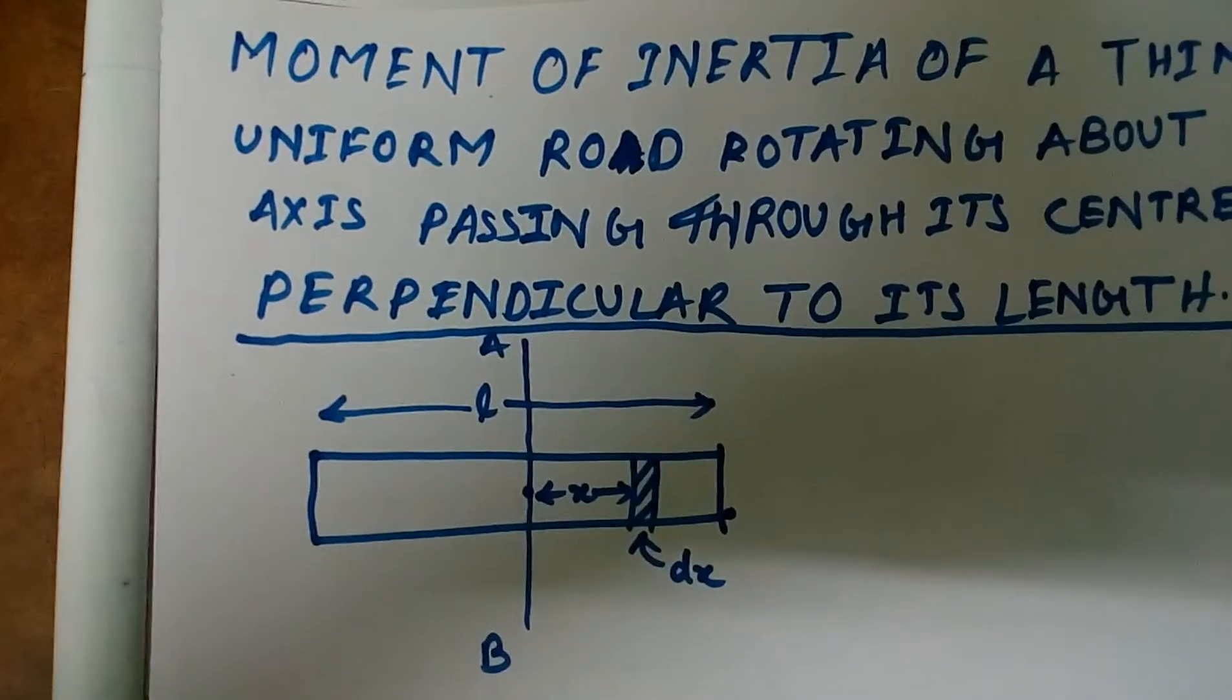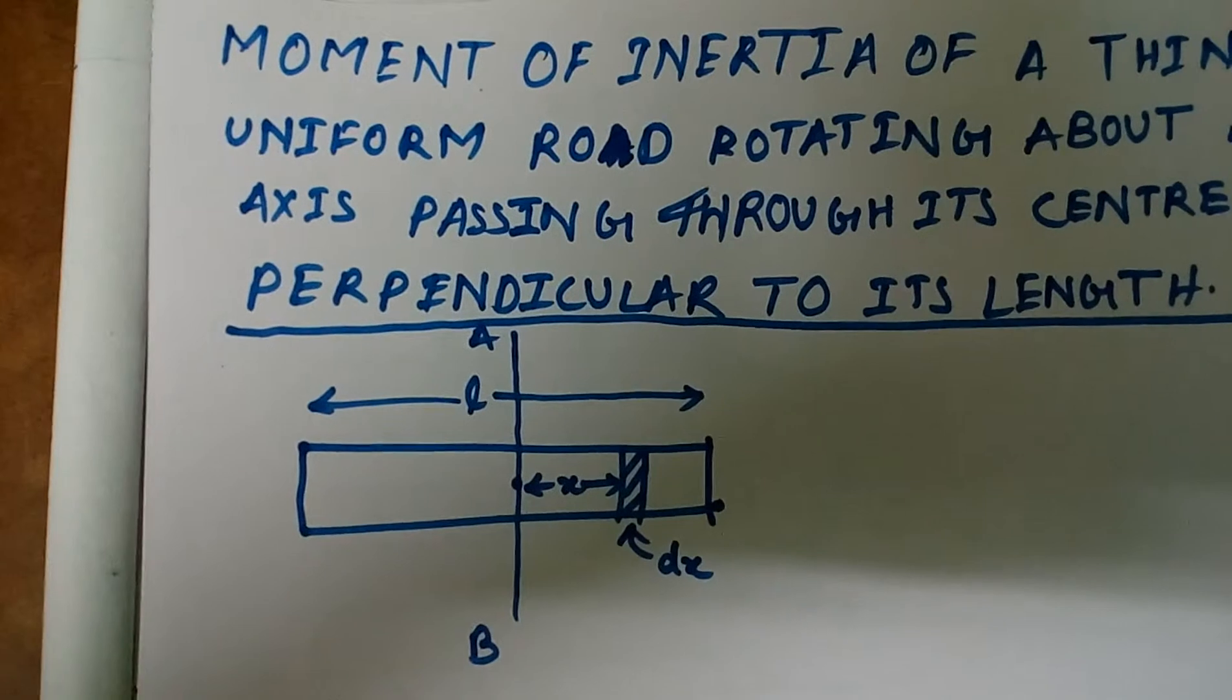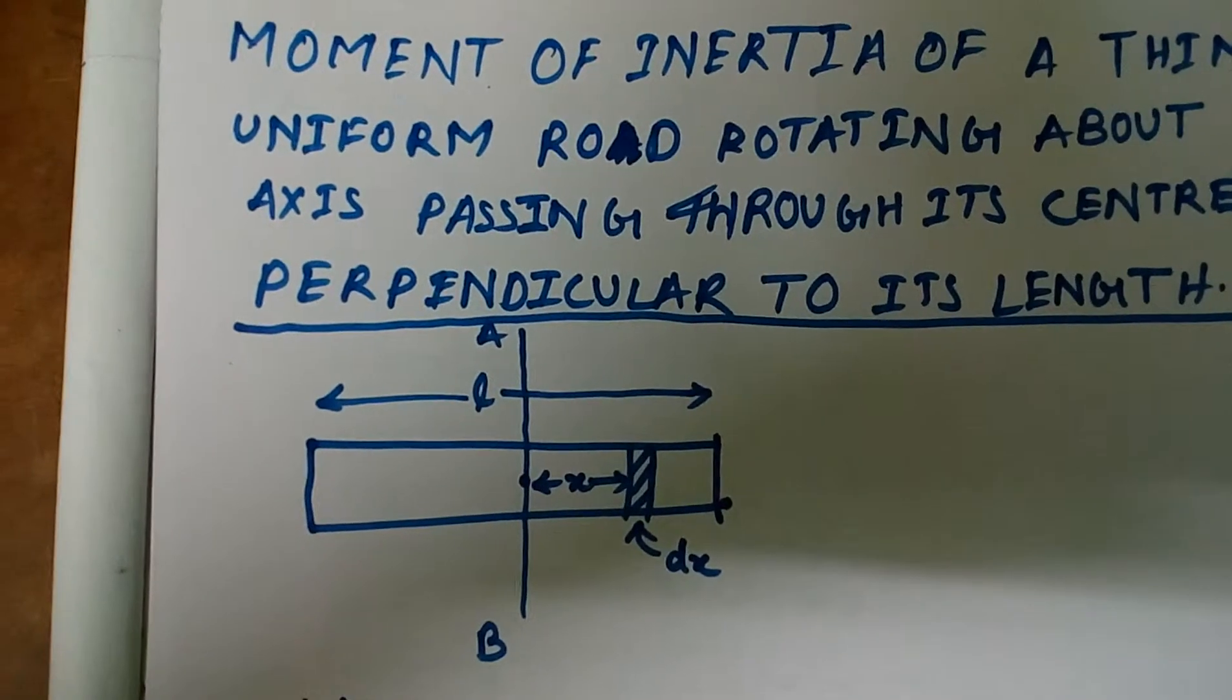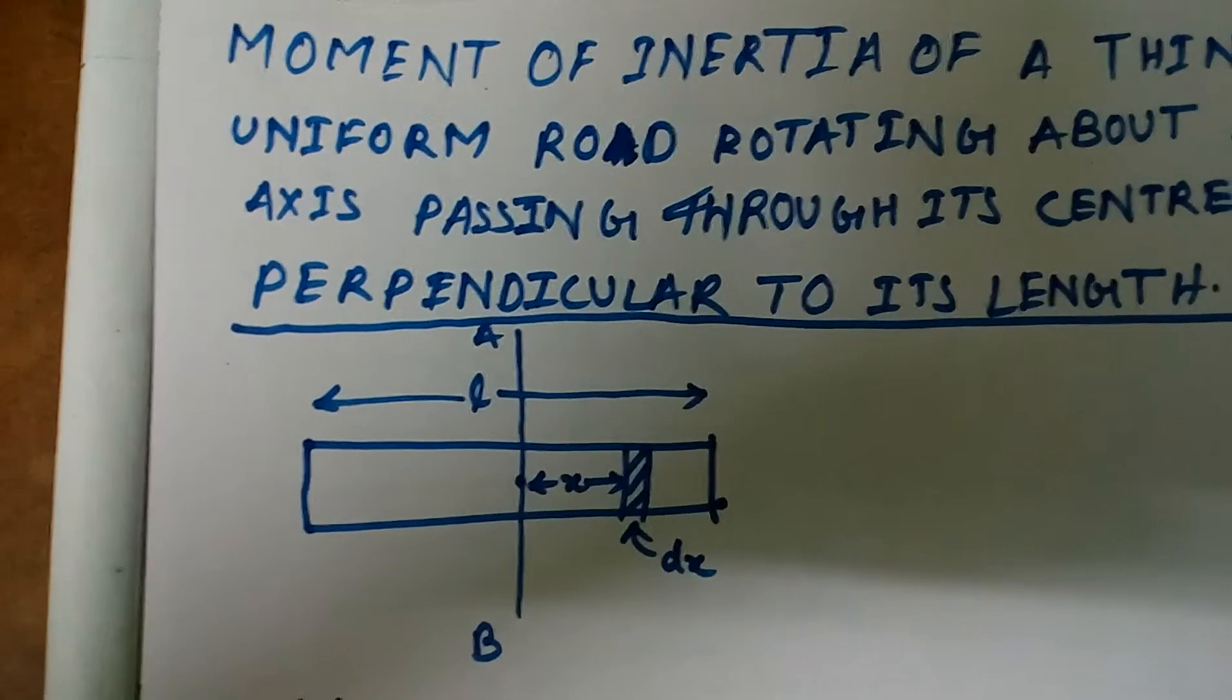So, this is the diagram. It's a thin uniform rod and the axis of rotation is AB. The rod is of length L.